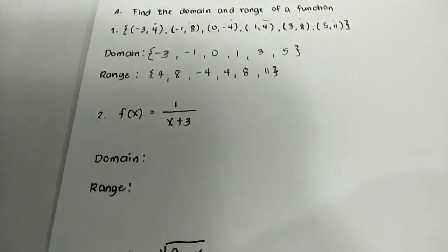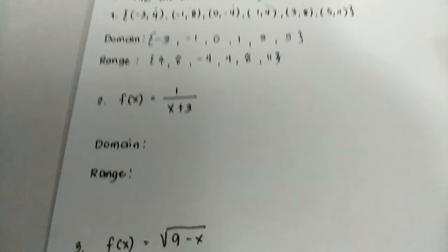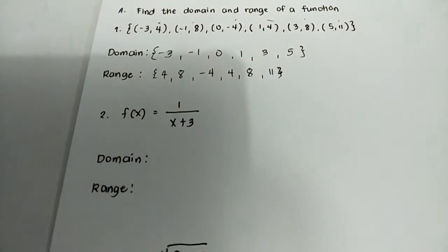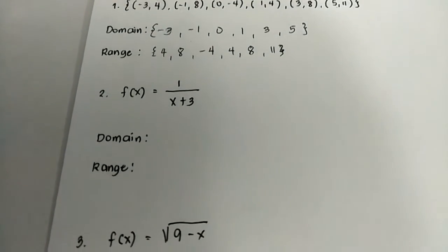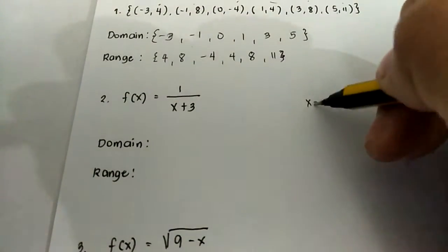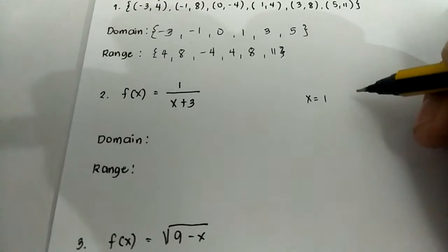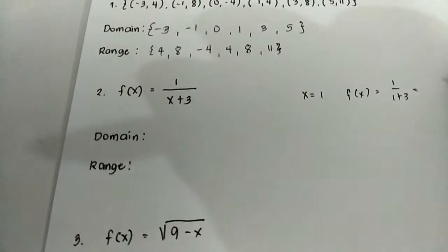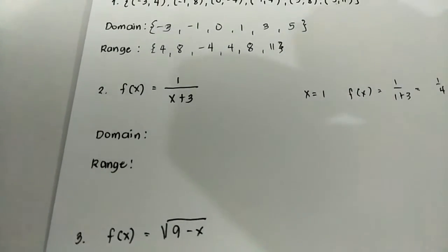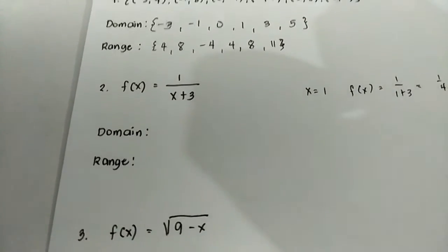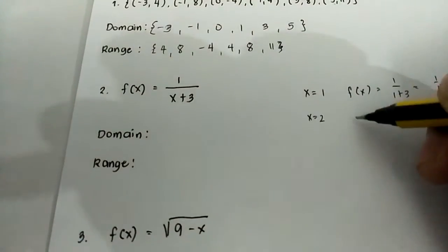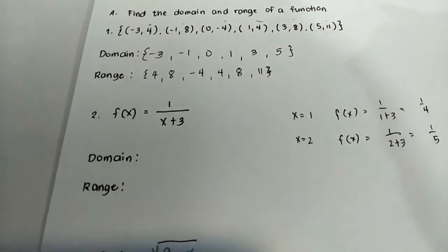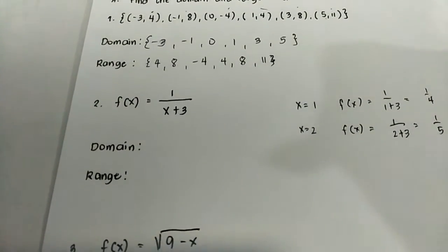Number two — in this case it is a function where we are going to think of all possible values of x to get the domain. Let us try x equals one: f(x) equals one over one plus three, which is one over four. So x equals one is possible. Next, when x equals two: one over two plus three equals one-fifth. The function works.